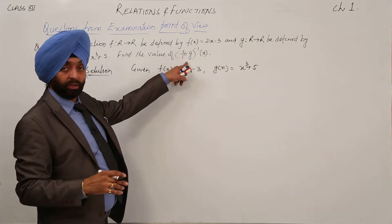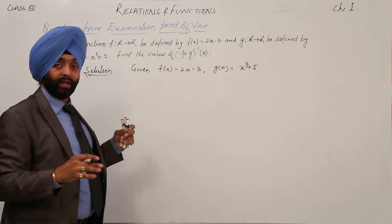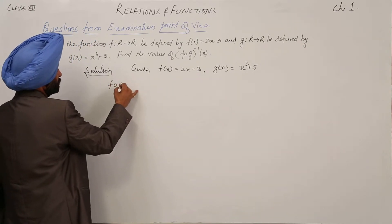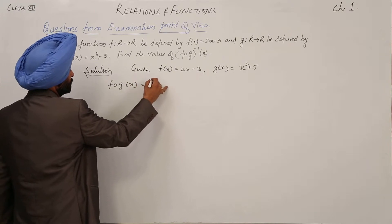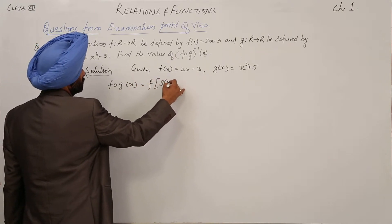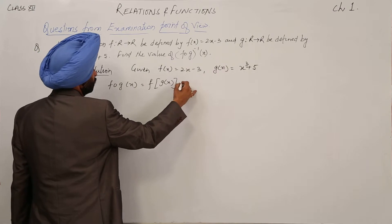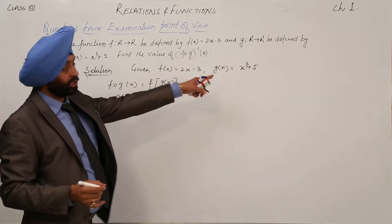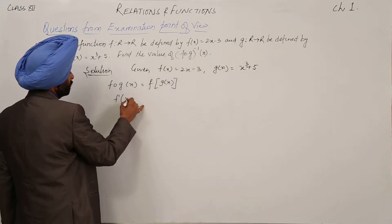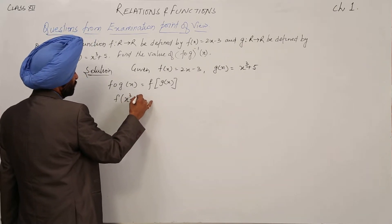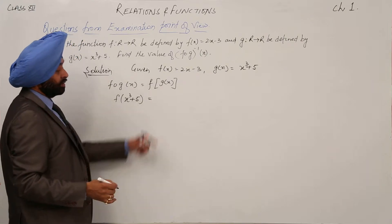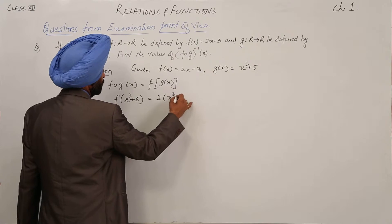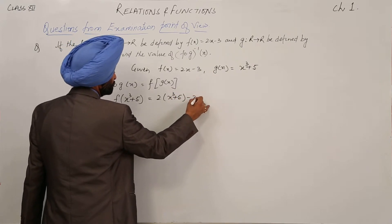Before finding the inverse, we have to find fog first. fog(x) is written as f of g(x). Now f of g(x) means f of (x cube plus 5), and we put x cube plus 5 into 2x minus 3. So we get 2(x cube plus 5) minus 3.